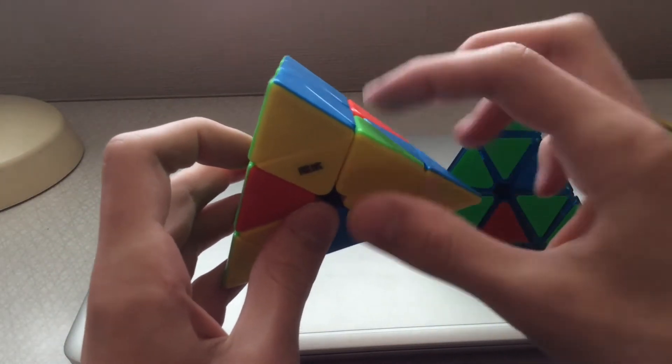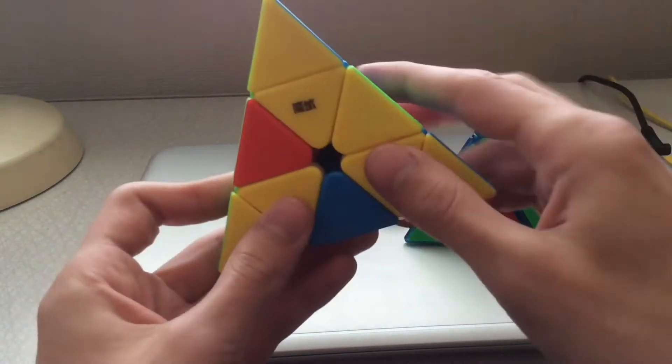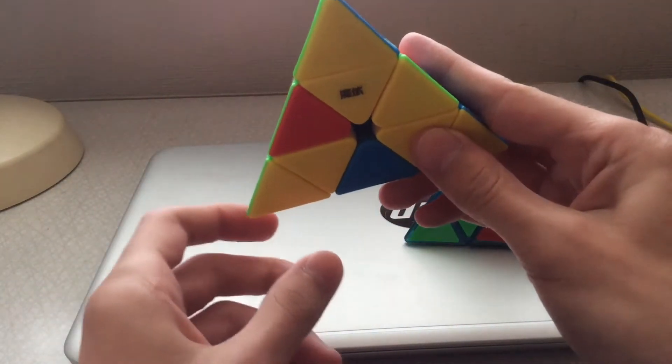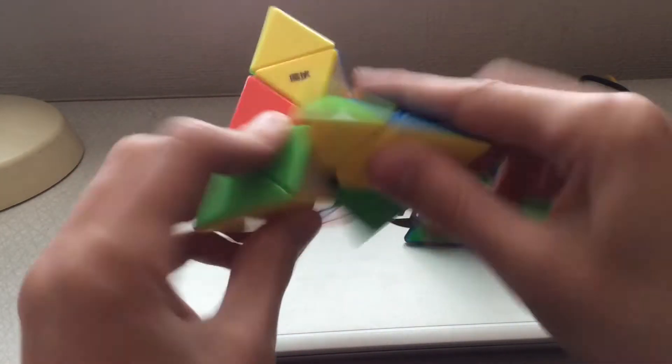So kind of like this, but the edge flipped. And then you have yourself all the centers and then you do a short algorithm which you probably already know for this case. So this one just this and then you do your last case.